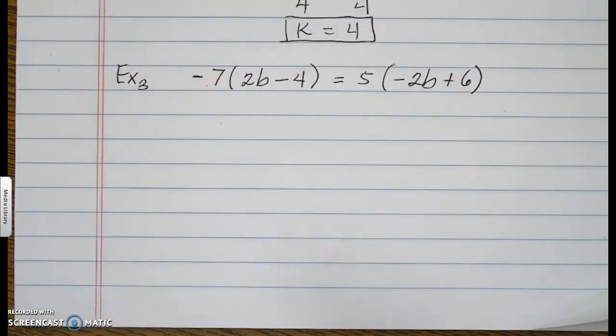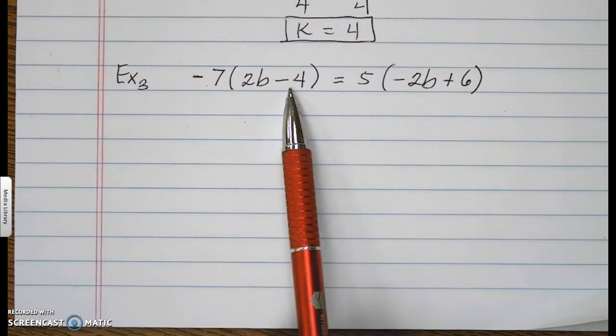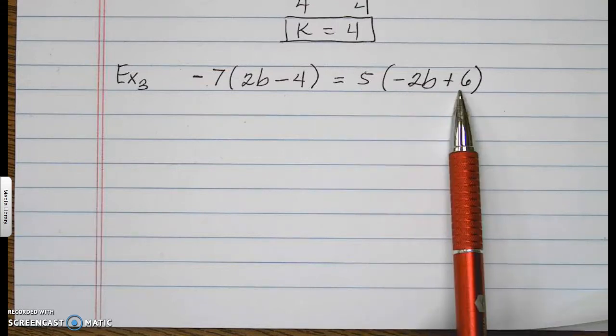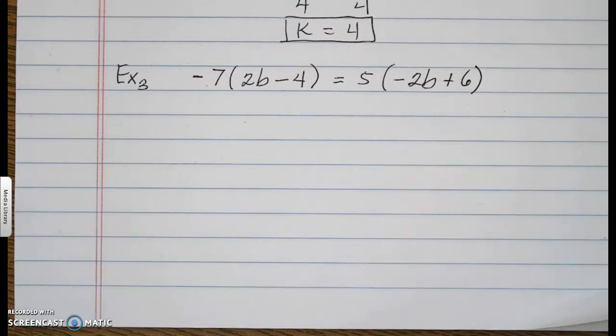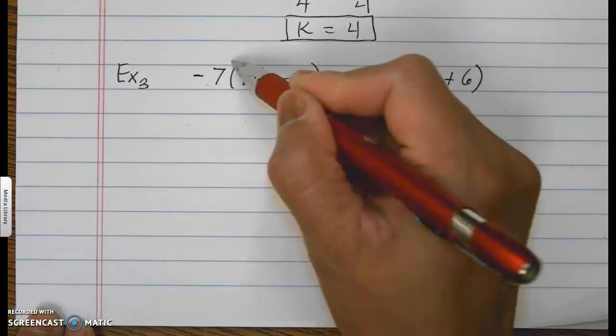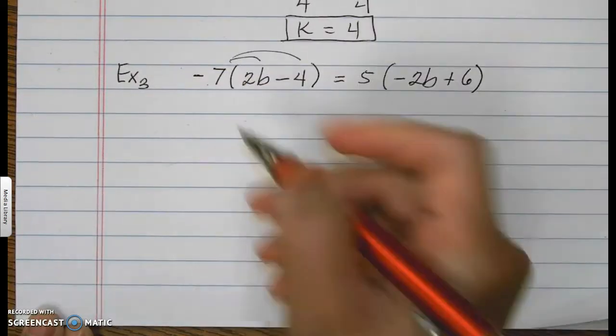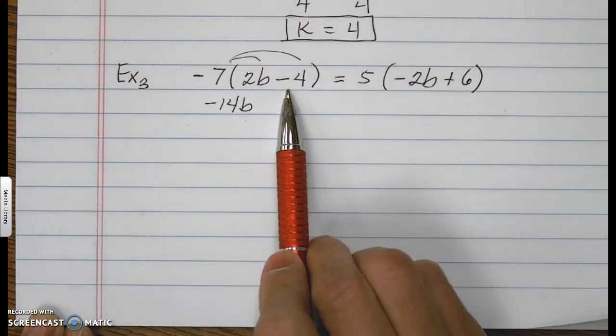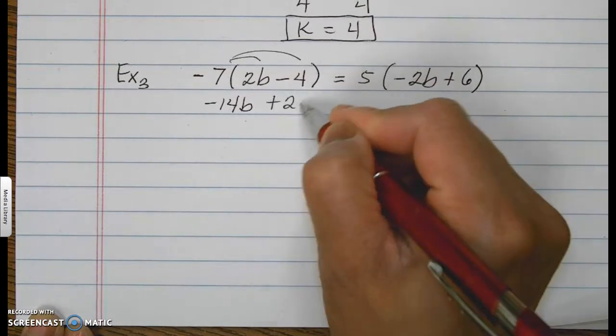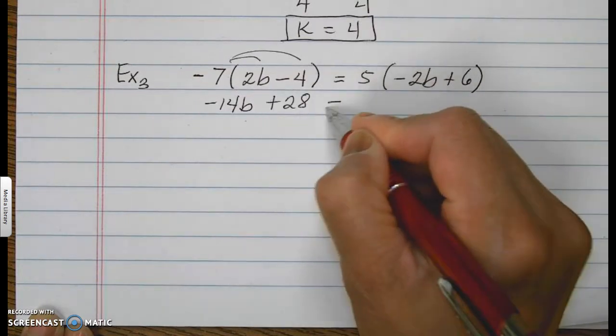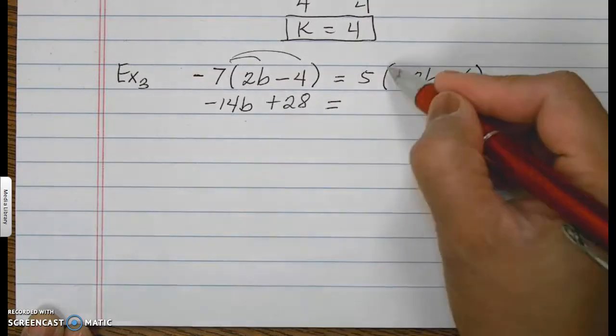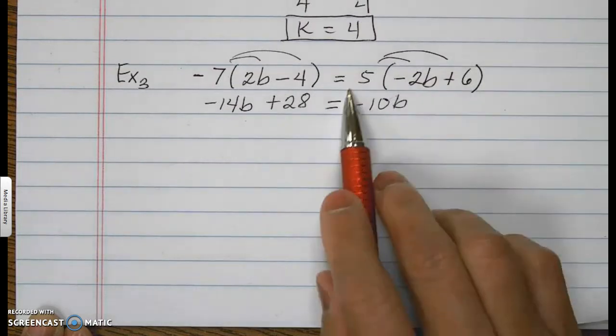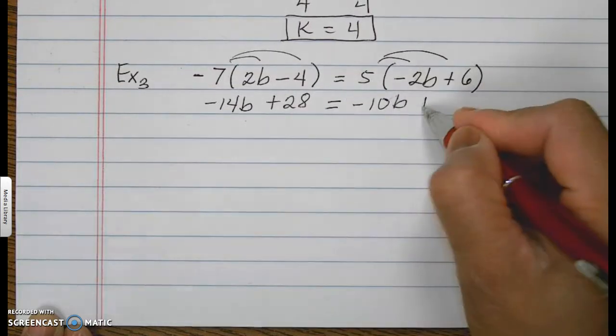Example number 3: negative 7, parentheses 2B minus 4, close parentheses equals 5, parentheses negative 2B plus 6, close parentheses. Whenever it is outside the parentheses, you know you need to distribute. And so, this would look like negative 14B. Negative 7 times negative 4 is positive 28. And this is to be distributed as well, making it negative 10B. Positive 5 times positive 6 is positive 30.